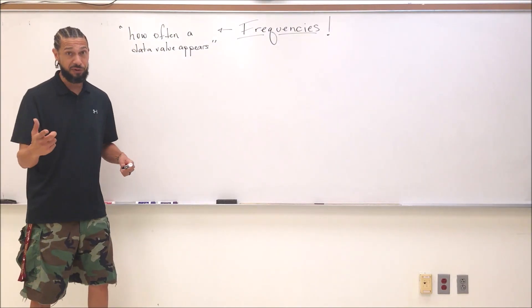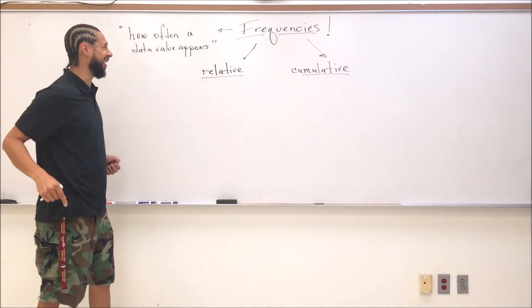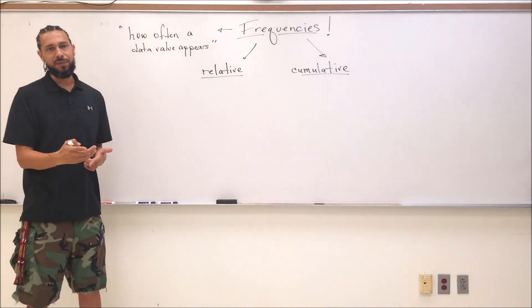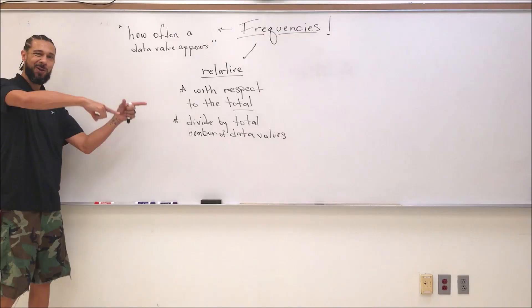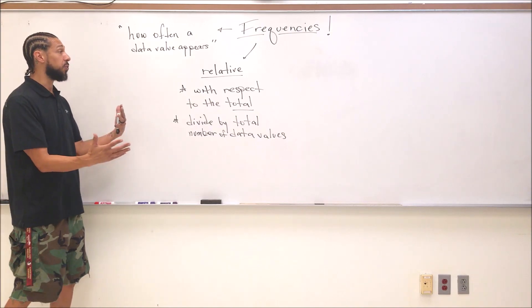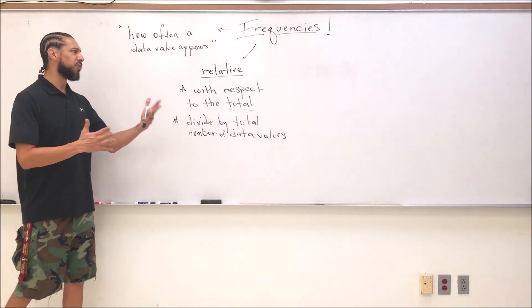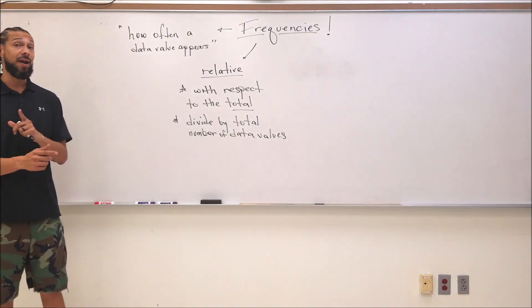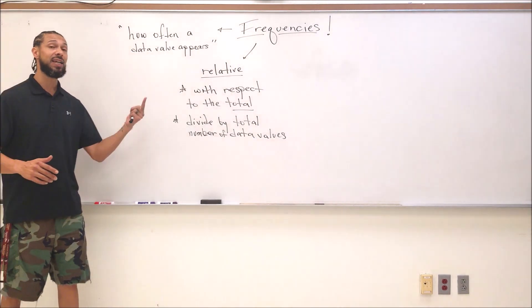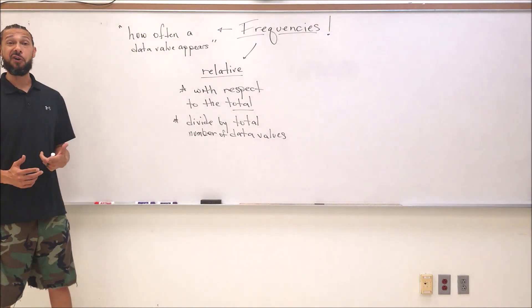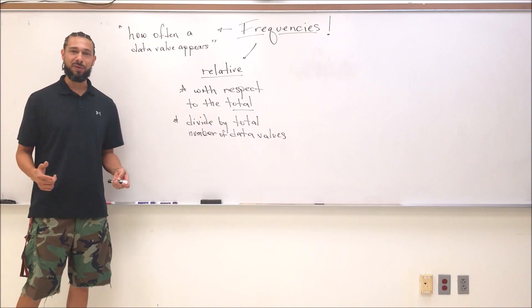We're going to talk about two different types of frequencies in this video: relative and cumulative. Relative, simply put, is frequencies with respect to the total. In math, when you hear with respect to, that usually means divide. We're going to take our frequencies and divide by the total number of data values.